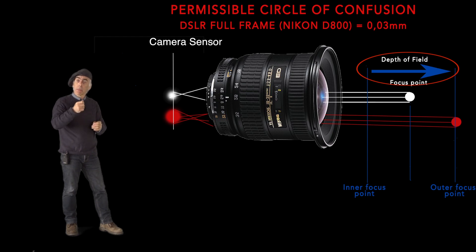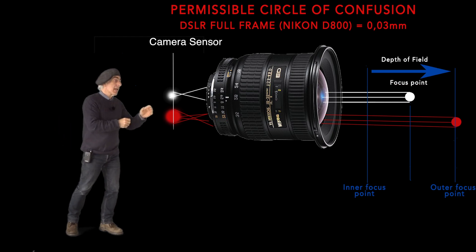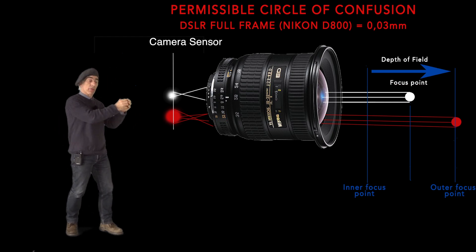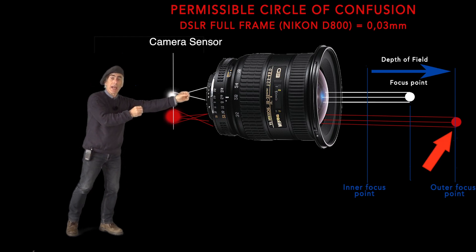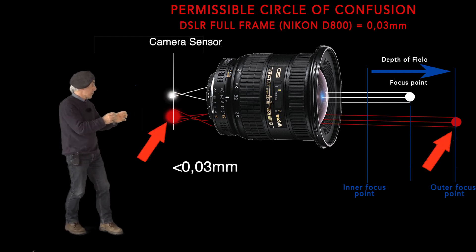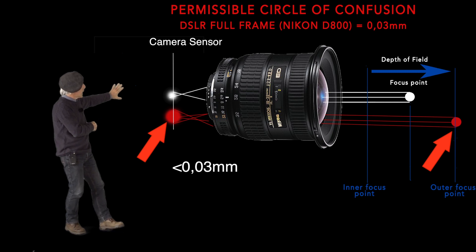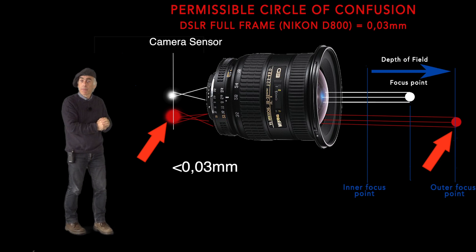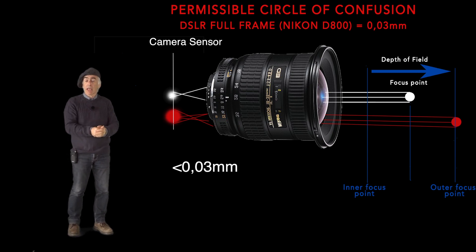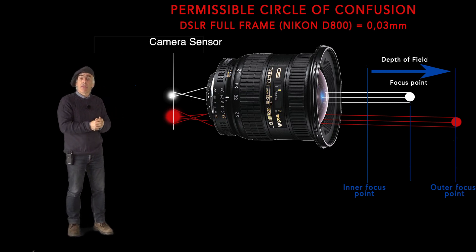As long as the object which is out of your focus point, so the object which is further away, that dish that it creates on your sensor is less than 0.03 millimeters for a full-frame sensor like a DSLR, then you will still see it as sharp.